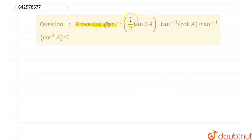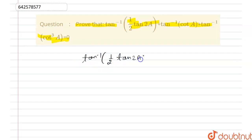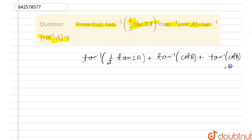The question says: prove that tan inverse of (1/2 · tan 2a) plus tan inverse of (cot a) plus tan inverse of (cot³a) is equal to 0. We have to prove that tan inverse of (1/2 · tan 2a) plus tan inverse of (cot a) plus tan inverse of (cot³a) is equal to 0.